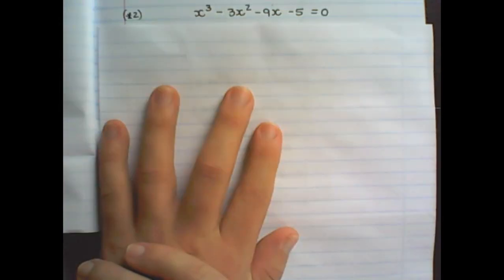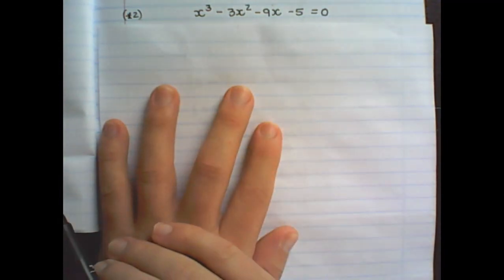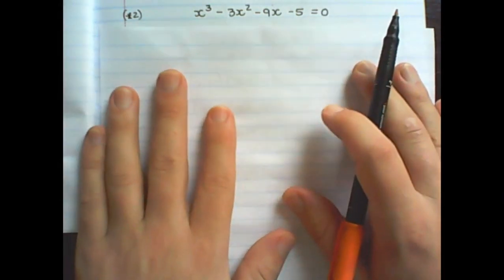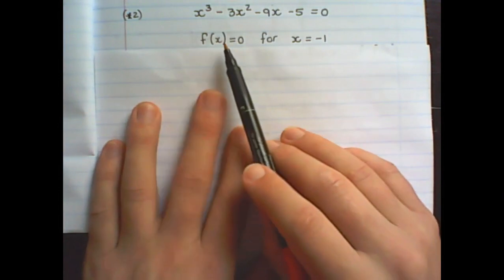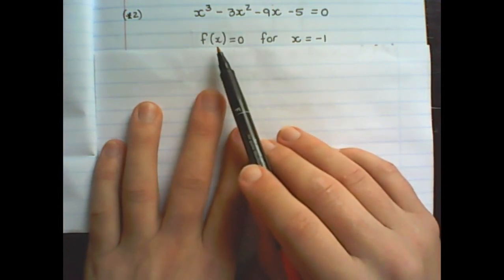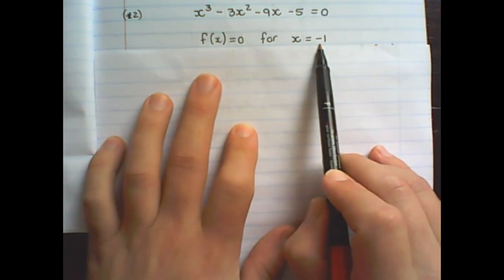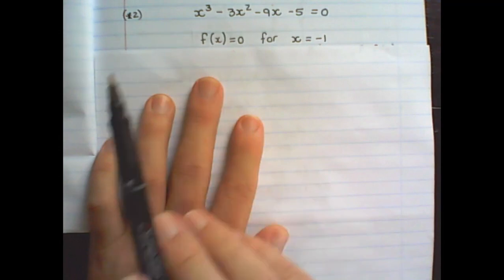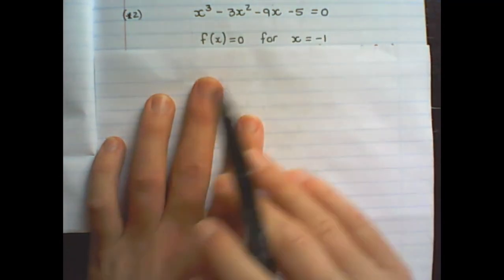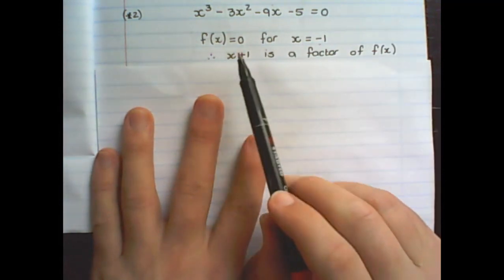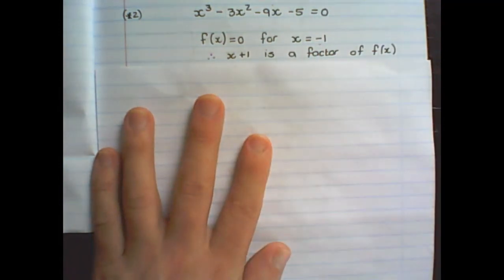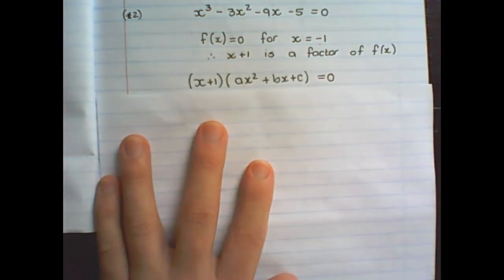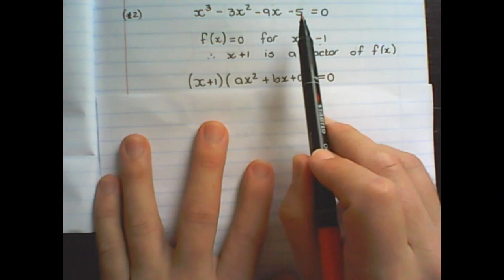Step two is to find the x-intercepts — remember we can find one, two, or three values. We use the remainder and factor theorem from previous lessons. We need to find a value for x that makes f(x) equal to zero. Substituting x = −1 makes the equation equal to zero, so (x + 1) is a factor of f(x). We now rewrite and factorize f(x).